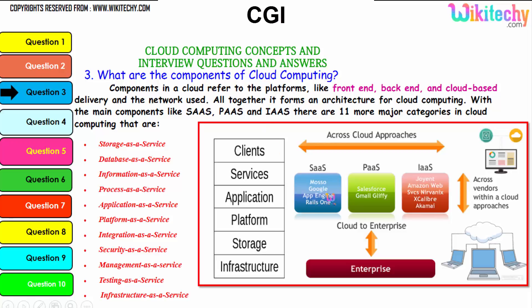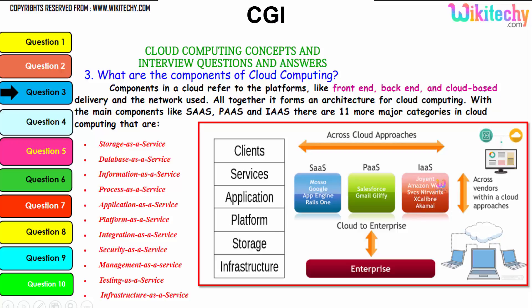For Software as a Service, examples are Google App Engine, Azure, and TPL. For Platform as a Service, examples include Gmail, Glyphi, and Salesforce. For Infrastructure as a Service, there are many companies such as Amazon Web Services, Advanix, Excalibur, Akami, and others.